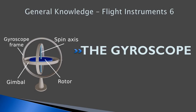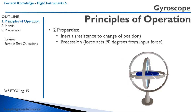Hello everyone. Welcome back to FreePilotGroundSchool.ca. This is the sixth lesson on flight instruments. We're going to talk about the gyroscope. Probably you have seen them as a kid — a toy top that you spin is considered a gyroscope. The gyroscope is inside several instruments that are used in an aircraft.